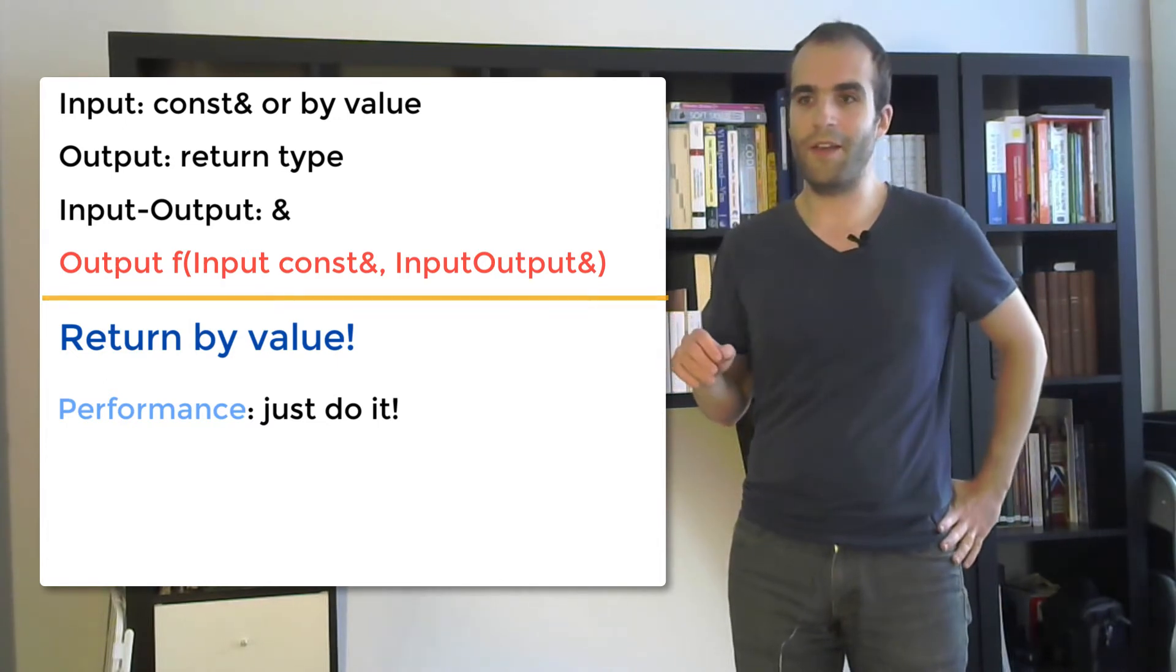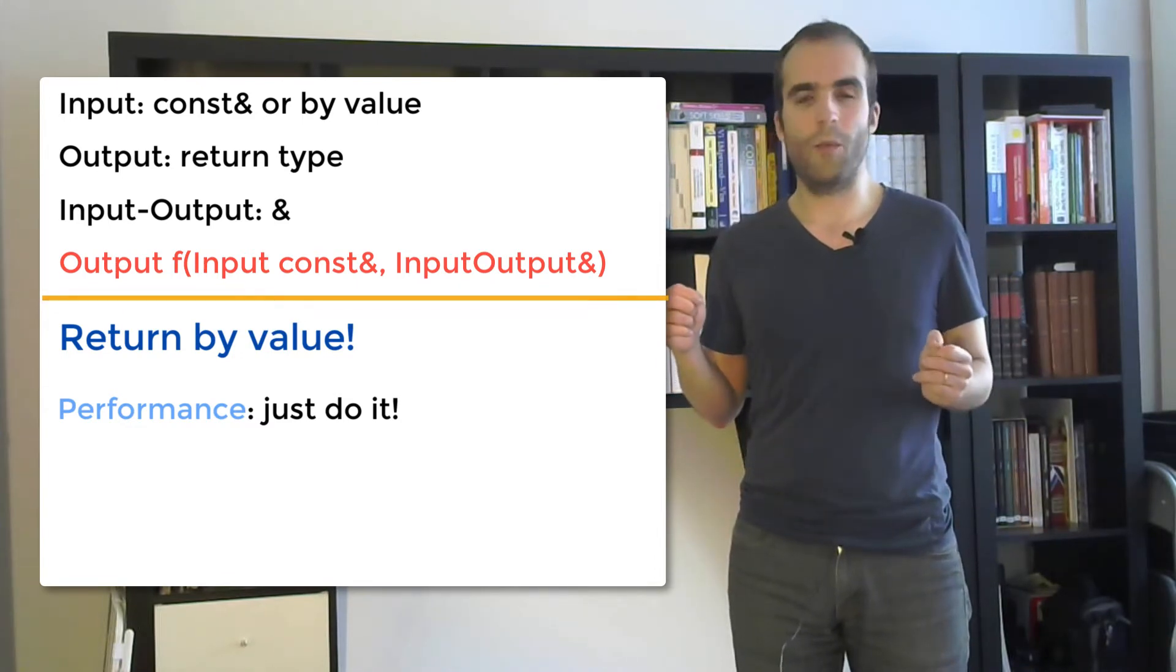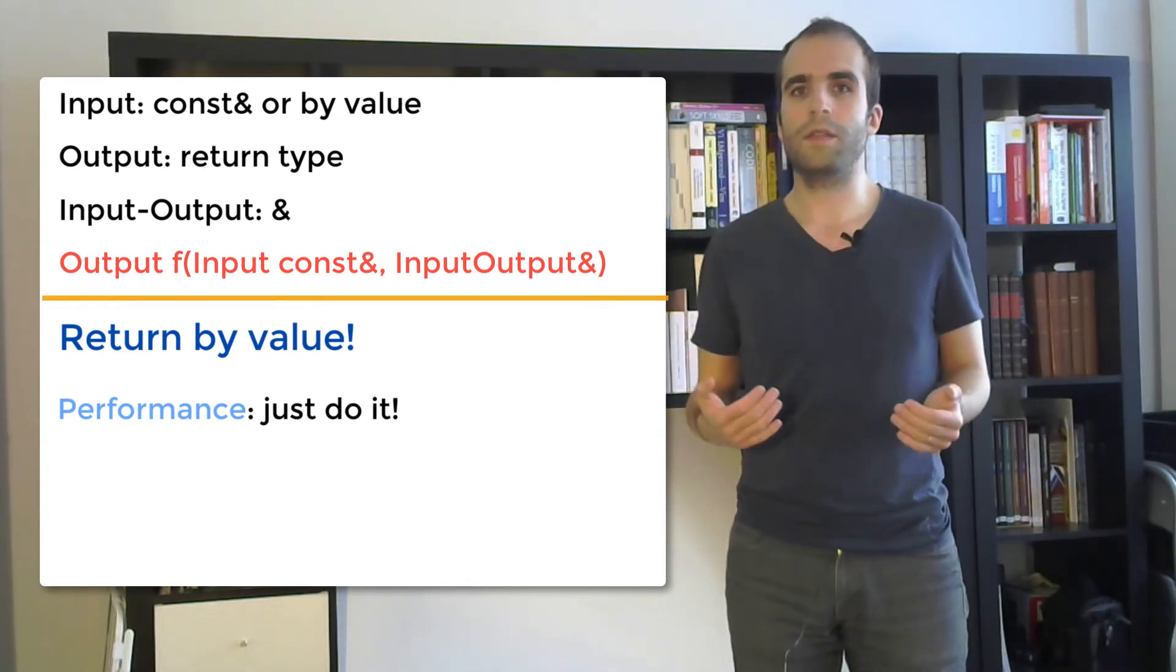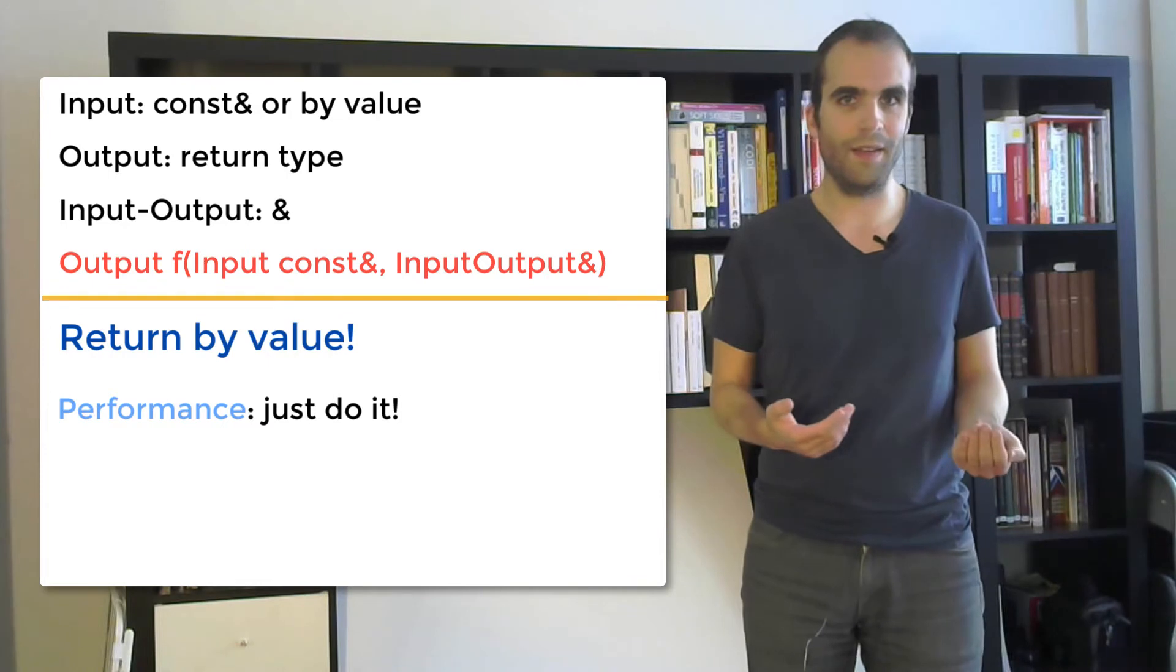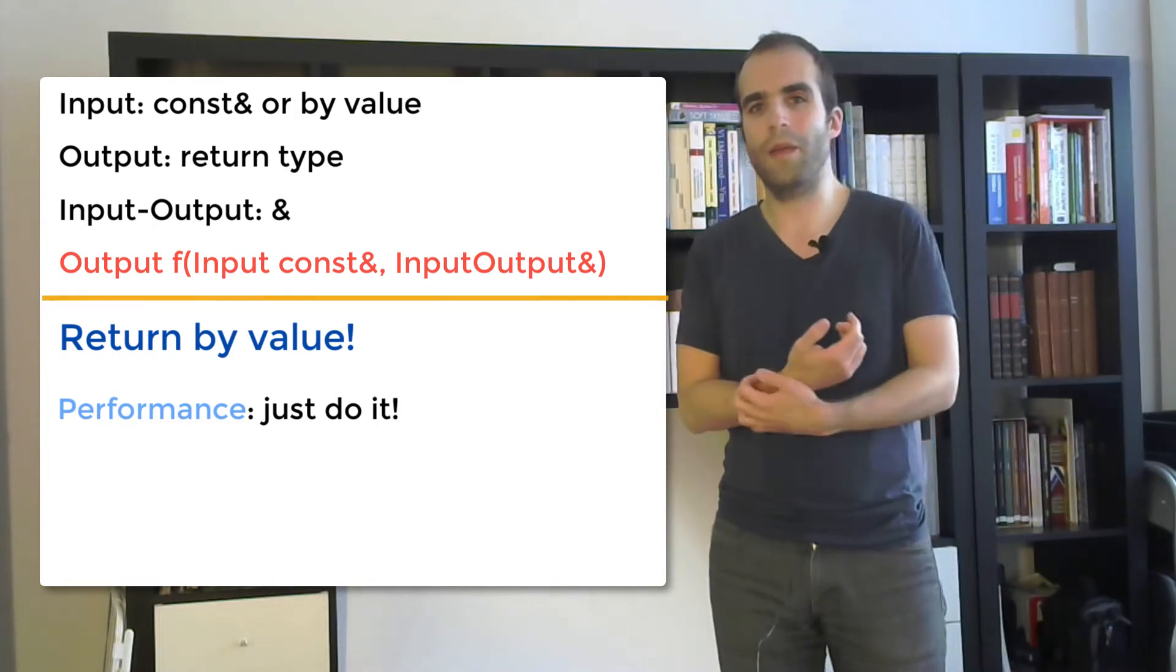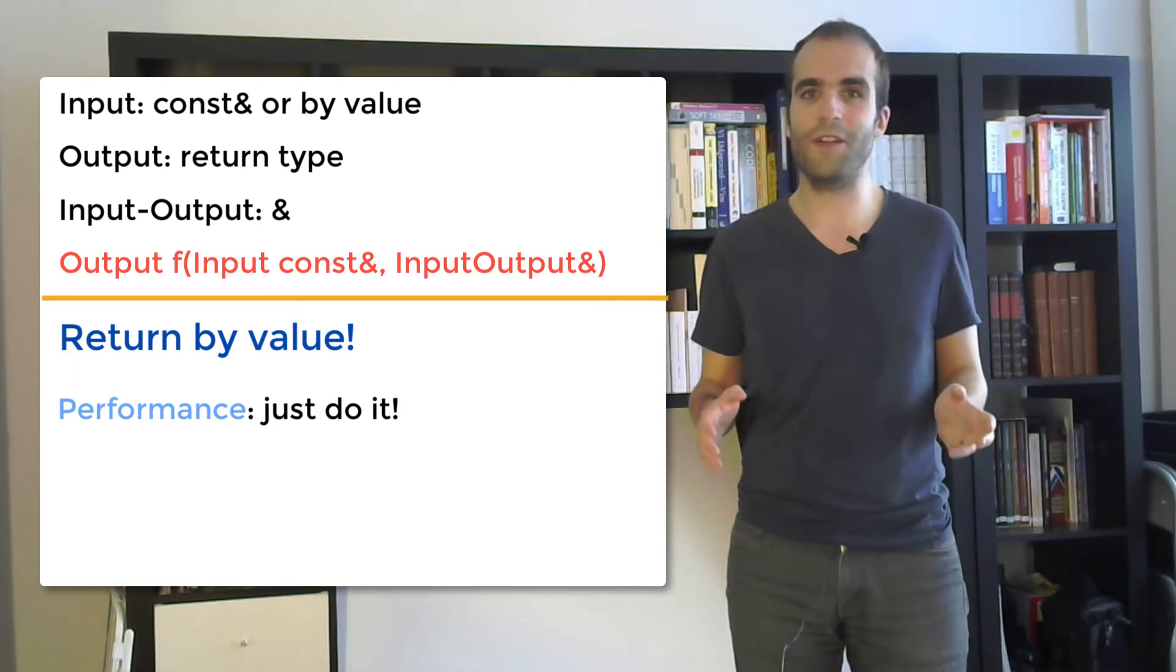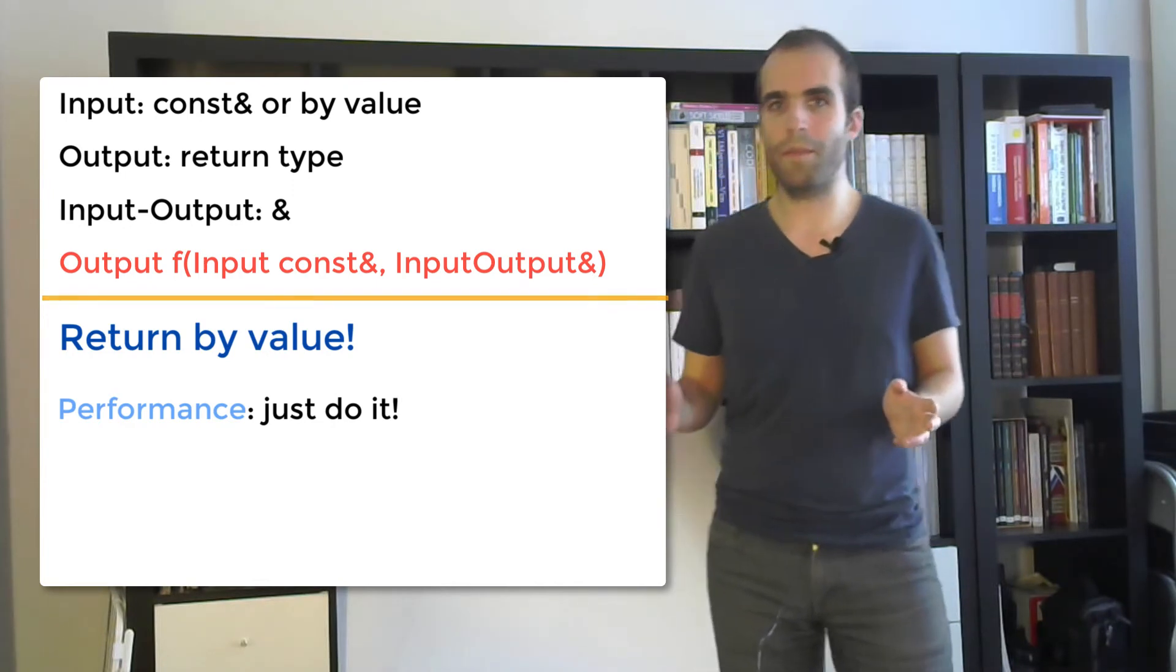Now there's another thing that prevents us from returning by value. It's error handling. So imagine that for some reason in some cases a particular function is not able to compute its output. What should we return in that case? Then using the pass output by reference to not const sounds attractive because if the function is not able to compute its result then it just doesn't do anything with the parameter.